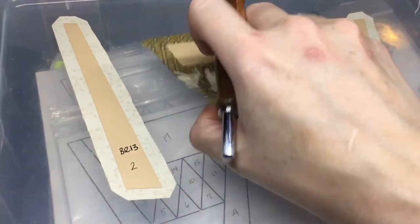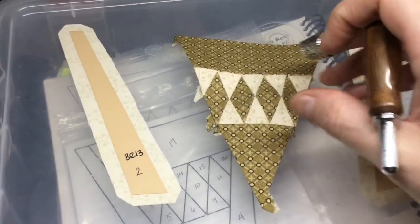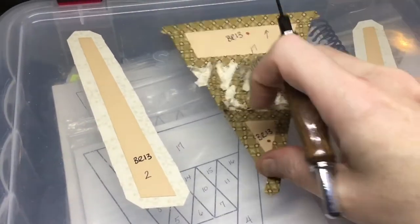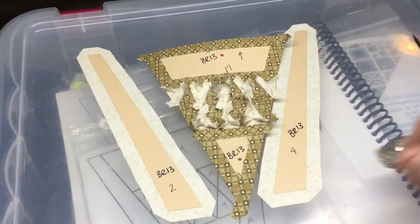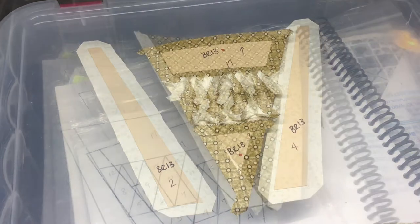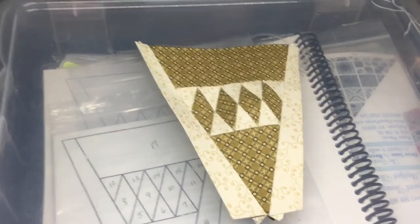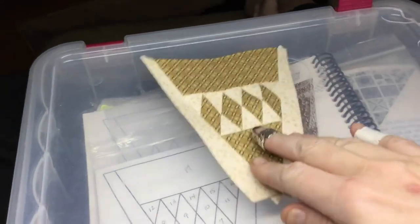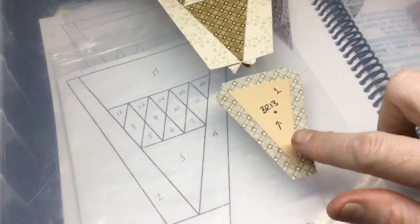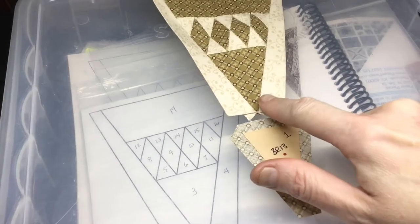So I've attached triangle number three to the middle unit. And so now I'm going to attach each side to the center. So I've attached each side to the center unit. And now the only thing left is to attach triangle number one to the point.